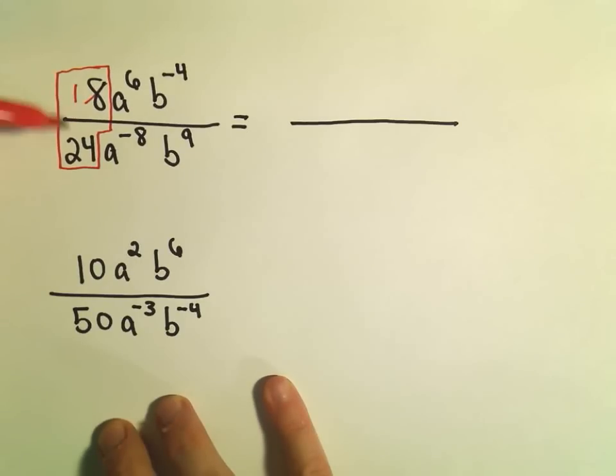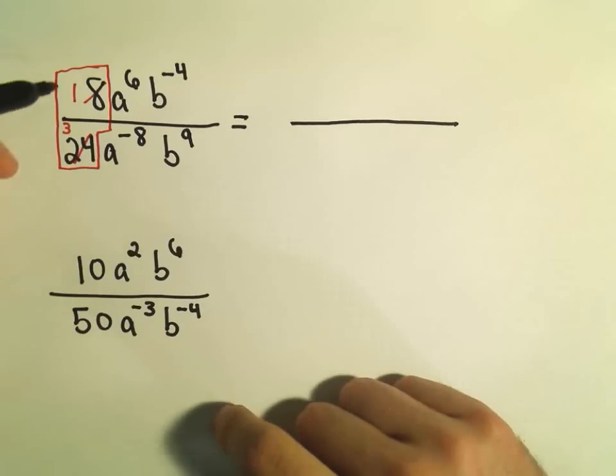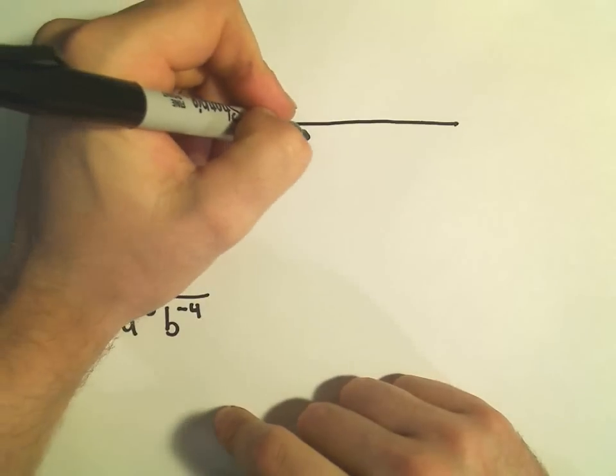Well, 8 goes into 8 one time, 8 goes into 24 three times. So 8 over 24 is going to reduce to one-third. So there's going to be a 3 in the denominator.